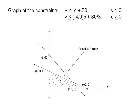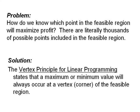Now notice in this region, there are lots of possible points that will lead to a maximum profit, which is our next hurdle to solve. How do we know which points in the feasible region will maximize profit? There are thousands of possible points to check. How do we know which one will maximize things?